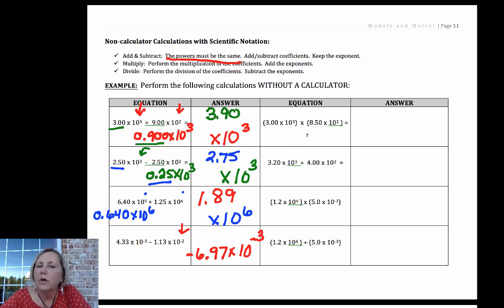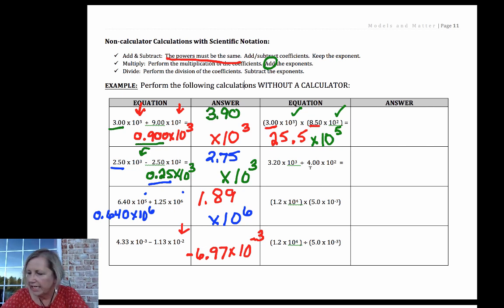In multiplication, you don't have to get the powers to be the same. So instead, what we're going to do is we're going to perform the multiplication with the coefficients. So when I did that, I got 25.5, and then what we're going to do is when you're doing multiplication, you add the exponents. So I would take my 3 plus my 2, and I get 5. Now here's the issue: this is not correct scientific notation, so you would have to fix that to put it into correct scientific notation.